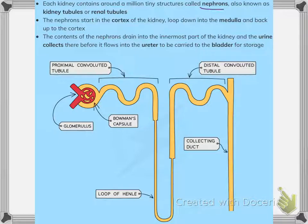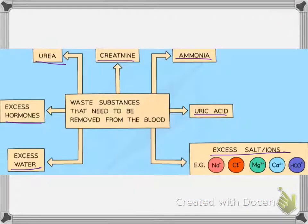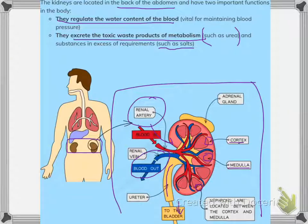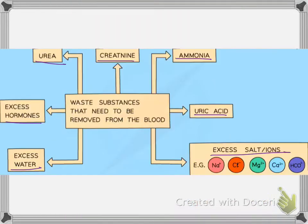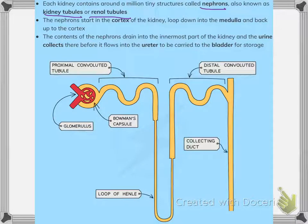This diagram shows the structure of a nephron. Each kidney contains millions of tiny structures called nephrons — these also have another name: kidney tubules or renal tubules. The nephrons start in the cortex, as we can see here, and loop down into the medulla.